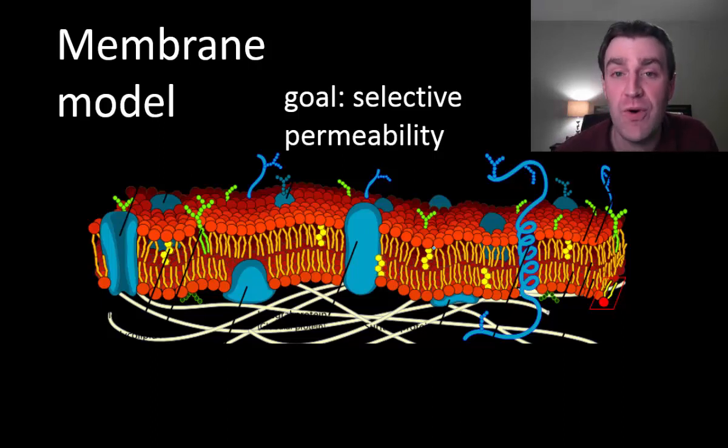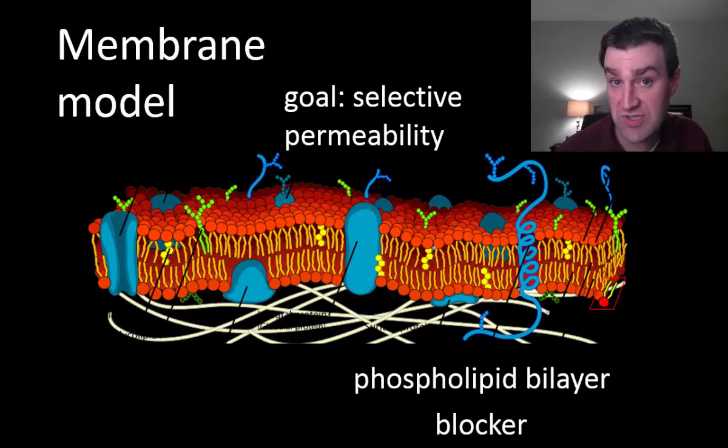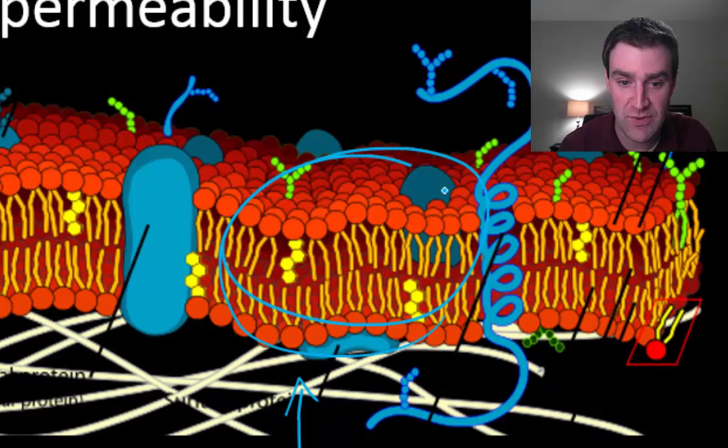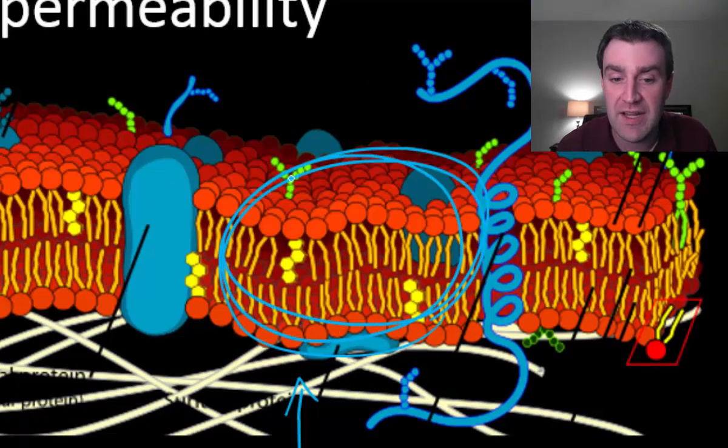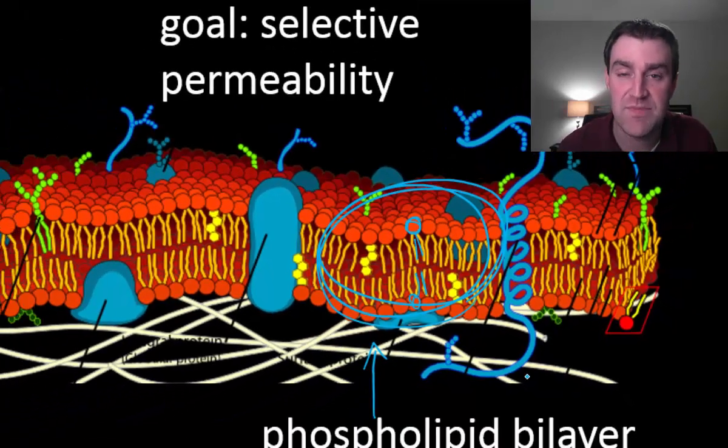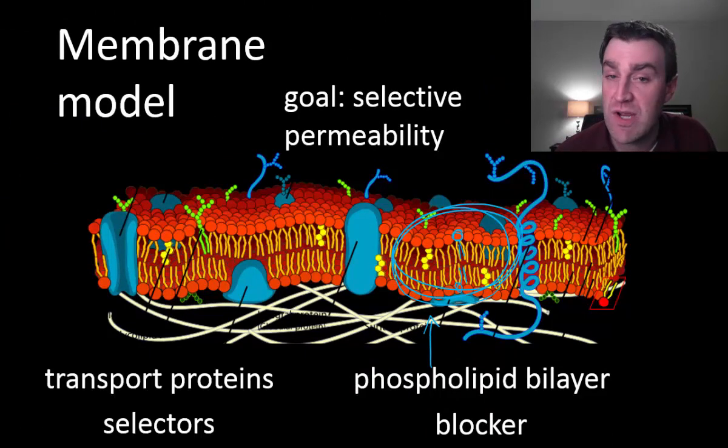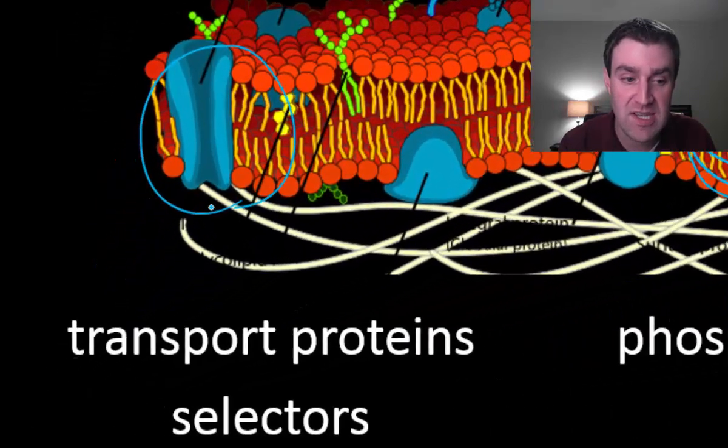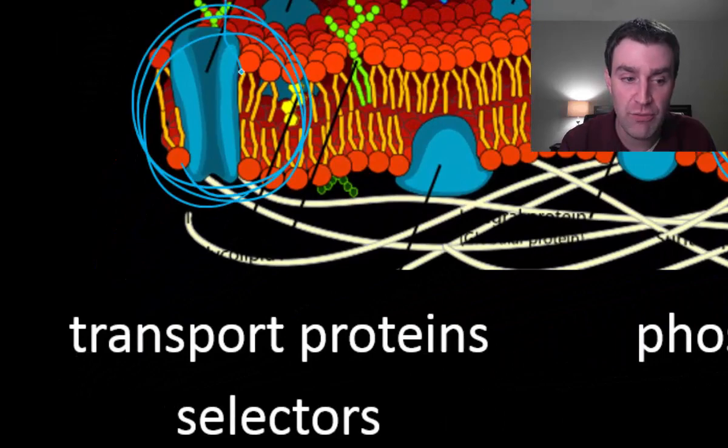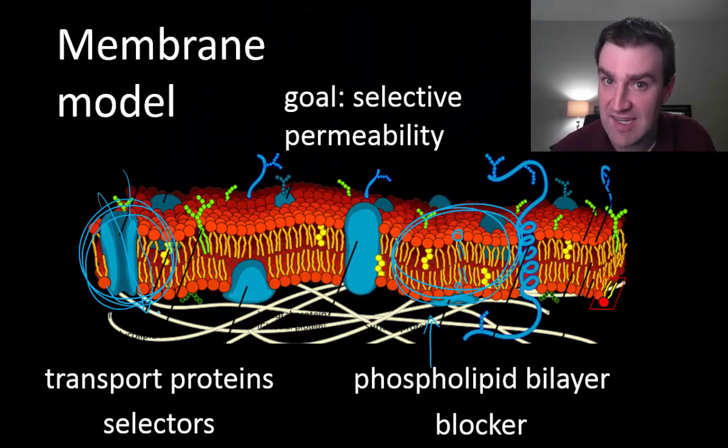In order to do that, we really need two broad functions. We need some kind of part that blocks most things from crossing. As it turns out, that's going to be our phospholipid bilayer, which is really all of this right here. We call it a bilayer because there are two different layers of these guys with heads and tails. We'll talk about them first and how they block, and then ultimately we'll talk about transport proteins that represent the selectors. They're going to select particular particles to go through them.